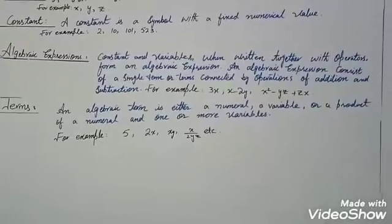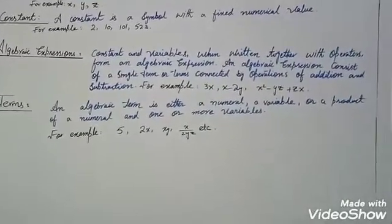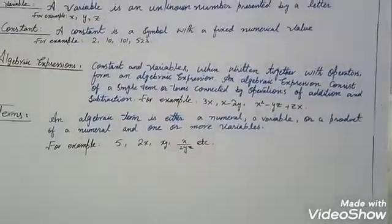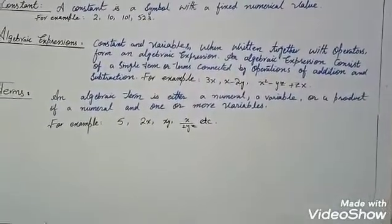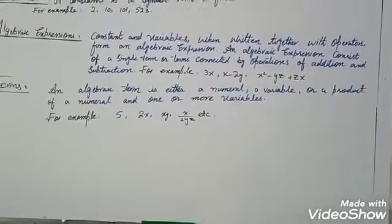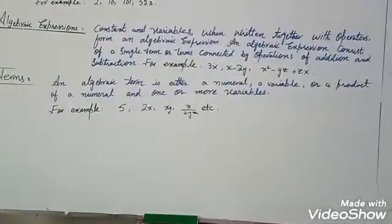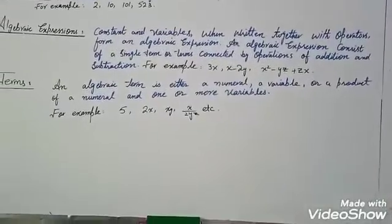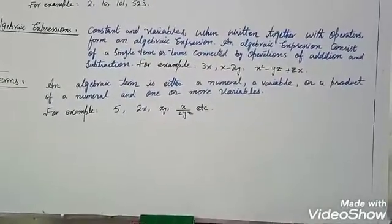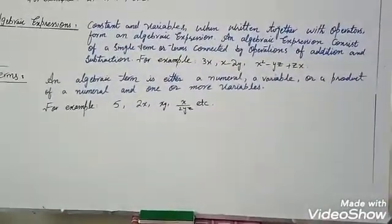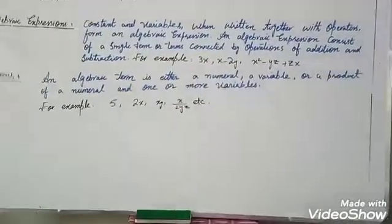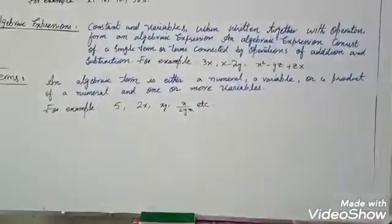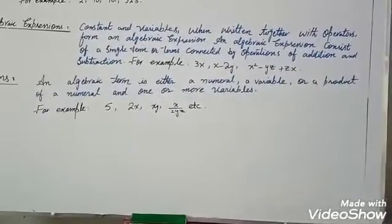Then comes the next and last definition: term. An algebraic term is either a numeral or a product of a numeral and one or more variables. So, you have either numbers or one or more than one variables. For example, 5 — 5 is a numeral, meaning a number.